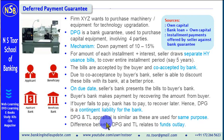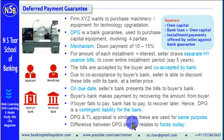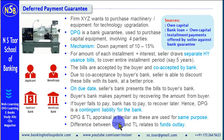What is the difference between Deferred Payment Guarantee and term loan? The difference primarily relates to the funds' outlay. In case of a term loan, the funds' outlay is immediate. In case of Deferred Payment Guarantee, the funds' involvement is contingent. In case of Deferred Payment Guarantee, the banks earn commission because it is a non-fund based business. In case of a term loan, the banks get interest because it is a funded exposure.